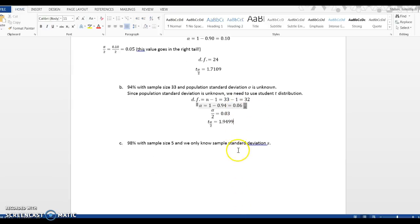Our last example: we want to compute a 98% confidence interval with a sample size 5, and we only know sample standard deviation S. So since population standard deviation is unknown, we use student T distribution.